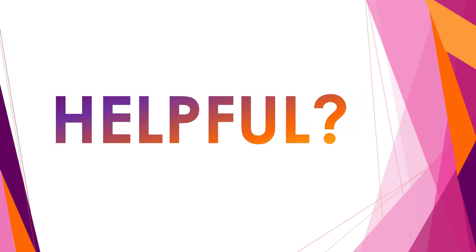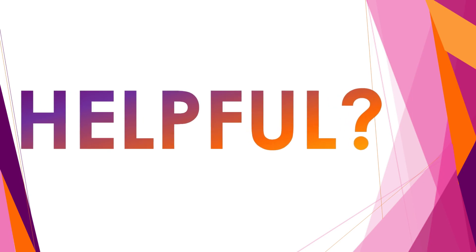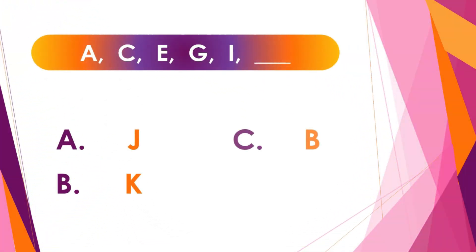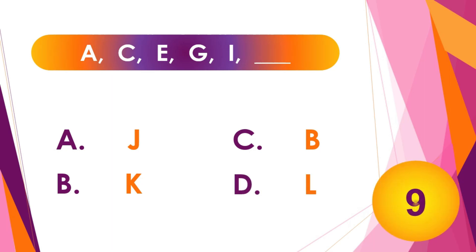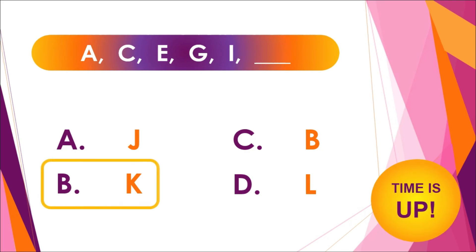Did you find the discussion helpful? To determine your level of understanding towards the lesson, tell me what comes next in the given pattern. You have ten seconds to answer each item. For number one, the answer is letter B — K. Why K? Because you skipped two letters to obtain the next letter.